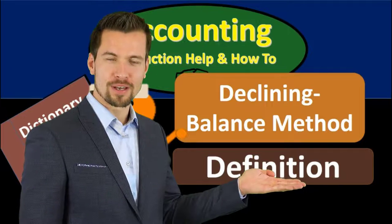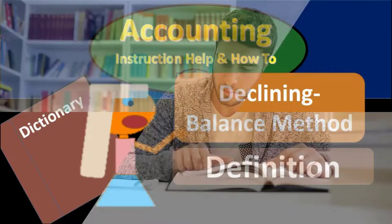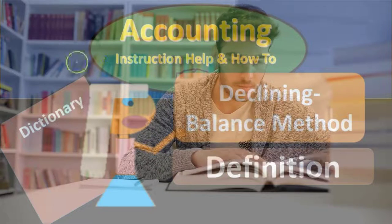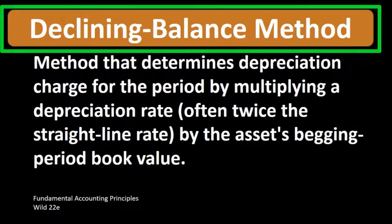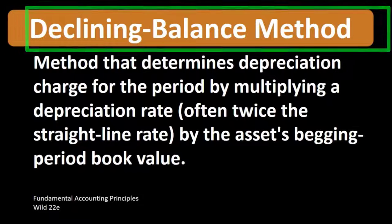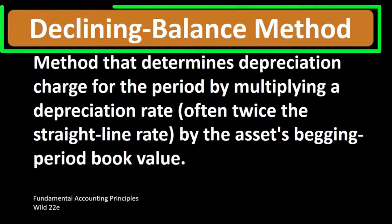In this lecture we will define the declining balance method according to Fundamental Accounting Principles, Wild 22nd Edition. The declining balance method is a method that determines the depreciation charge for the period by multiplying a depreciation rate — often twice the straight-line rate — by the asset's beginning period book value.